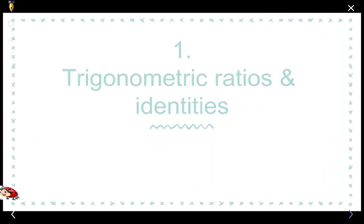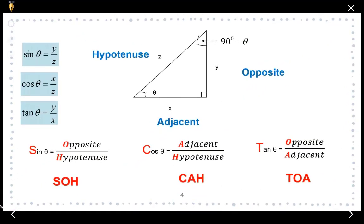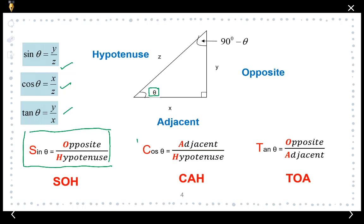We are now going to cover the first learning outcome. Given a right angle triangle, we must be able to state the sine, cosine, and tangent of an angle theta. Using the formula: sine is opposite over hypotenuse, cosine is adjacent over hypotenuse, and tangent is opposite over adjacent.